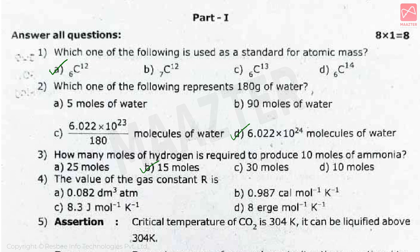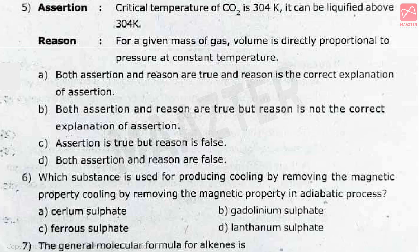The next question: the value of the gas constant R is? The correct answer is option C, 8.3 Joules per mole per Kelvin.